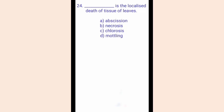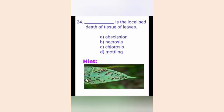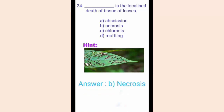Question number twenty-four. Dash is the localized death of tissue of leaves. The options are A. Abscission, B. Necrosis, C. Chlorosis, D. Mottling. The hint shows a picture of a leaf in a diseased condition. The correct answer is option B, Necrosis. Necrosis weakens the plants and makes them more susceptible to other diseases and pests.